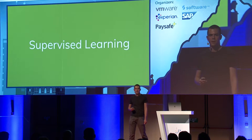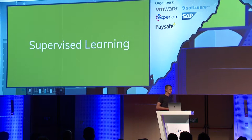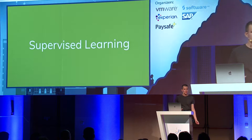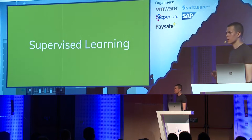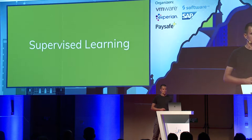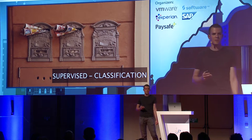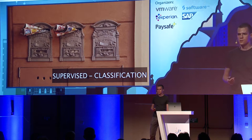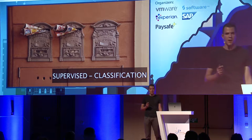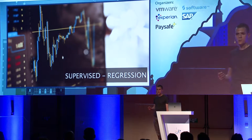In supervised learning we have examples. You can imagine an example as a row in a database table. You have something described by attributes — there can be numbers, dates, enums, text. And there is one very special attribute called a label. In this type of learning, we want to learn how to predict this label based on other attributes. Depending on the type of label, we talk about classification — when the label is a categorical nominal value and we assign examples to different classes, like spam and not spam — or regression, when the label is a number, like predicting Bitcoin or stock prices.